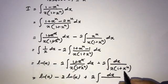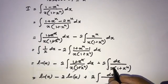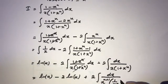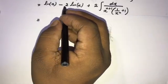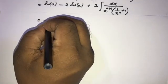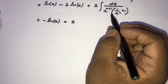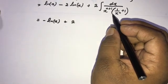We can take x^n as a factor in the denominator, writing it as x^(n+1) times (1/x^n + 1). So the expression becomes: natural log of x minus 2 times natural log of x, plus 2 times the integral of dx over x^(n+1) times (1/x^n + 1).